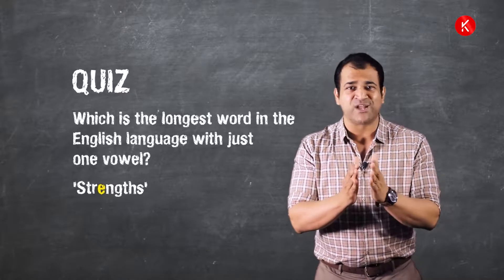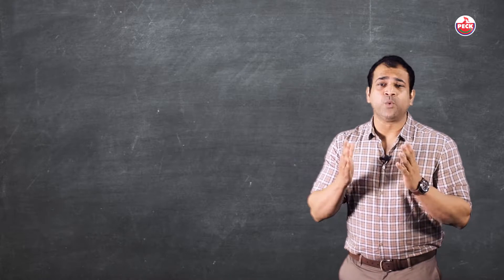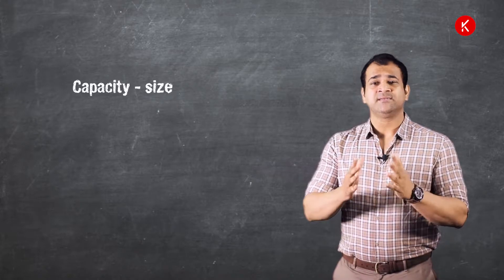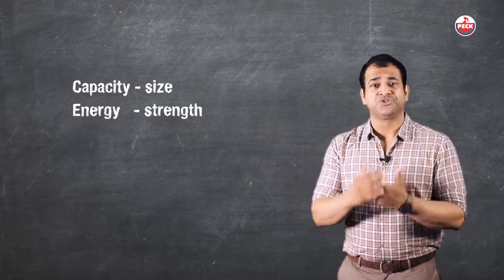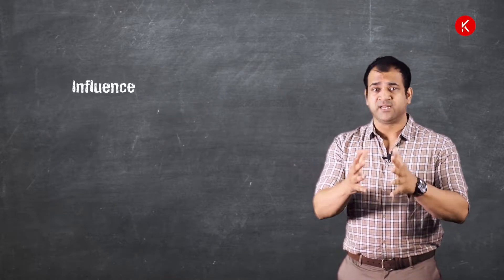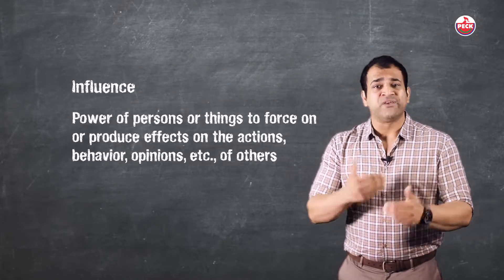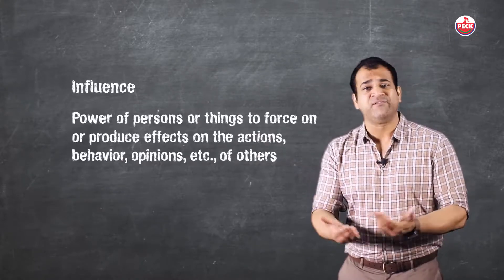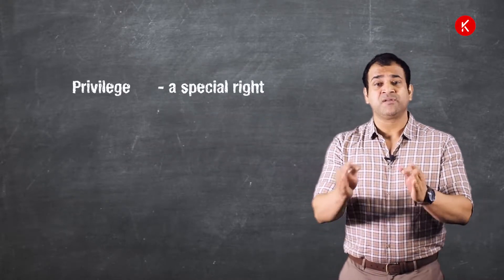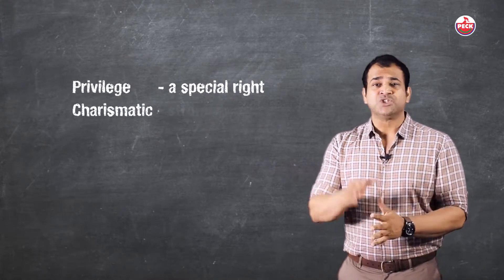Let's see the meanings of some of the words used in this particular episode. To start with: capacity meaning size; energy meaning strength; ability, skill to do something; influence, that's a very nice word, power of person or things to force on or produce effects on the action, behavior, opinions of others; privilege, a special right; charismatic is something I used when giving an example, charismatic, strong in character, full of personality.